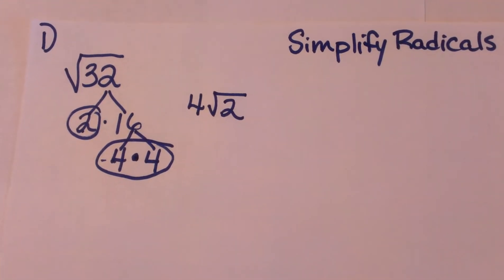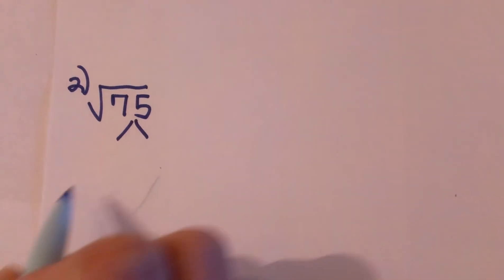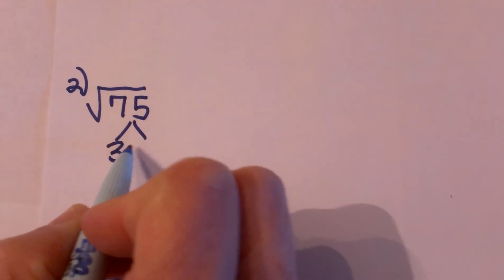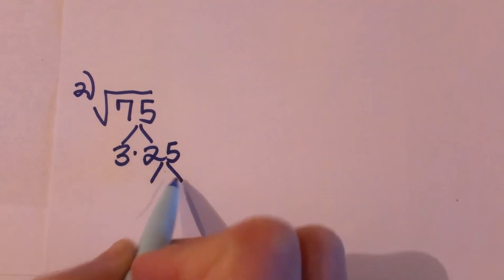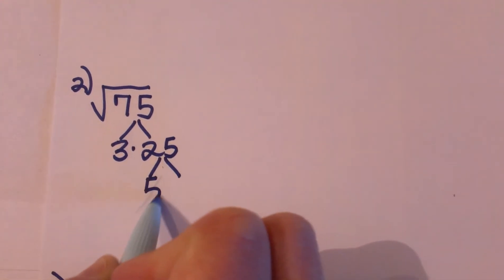Let's look at another one. The second one we are going to look at is the square root of 75. Well 75 we know it breaks down to 3 times 25 and 25 is nice because it is a perfect square so let's draw its factors.